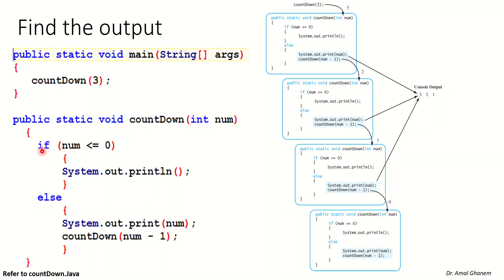Here we have a void method, so we expect no return — the output happens inside the method. If num is less than or equal to zero, we print a new line and do nothing else. Otherwise, we output num, then call the method again sending num minus one. This continues, changing the value of num and printing it until we reach zero.